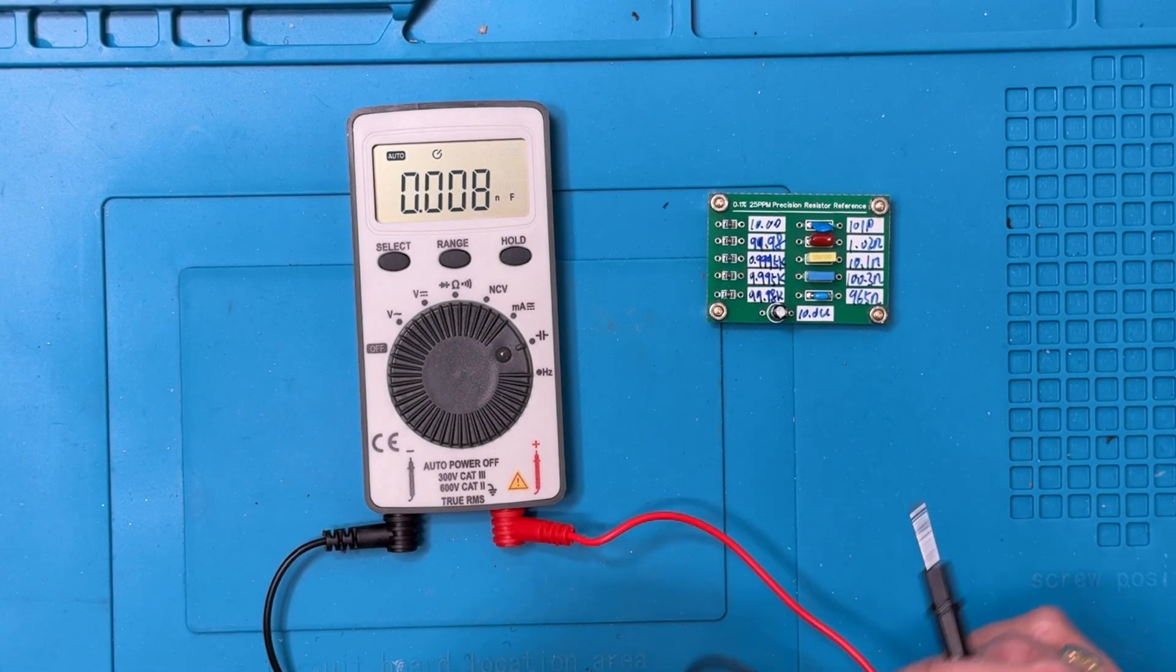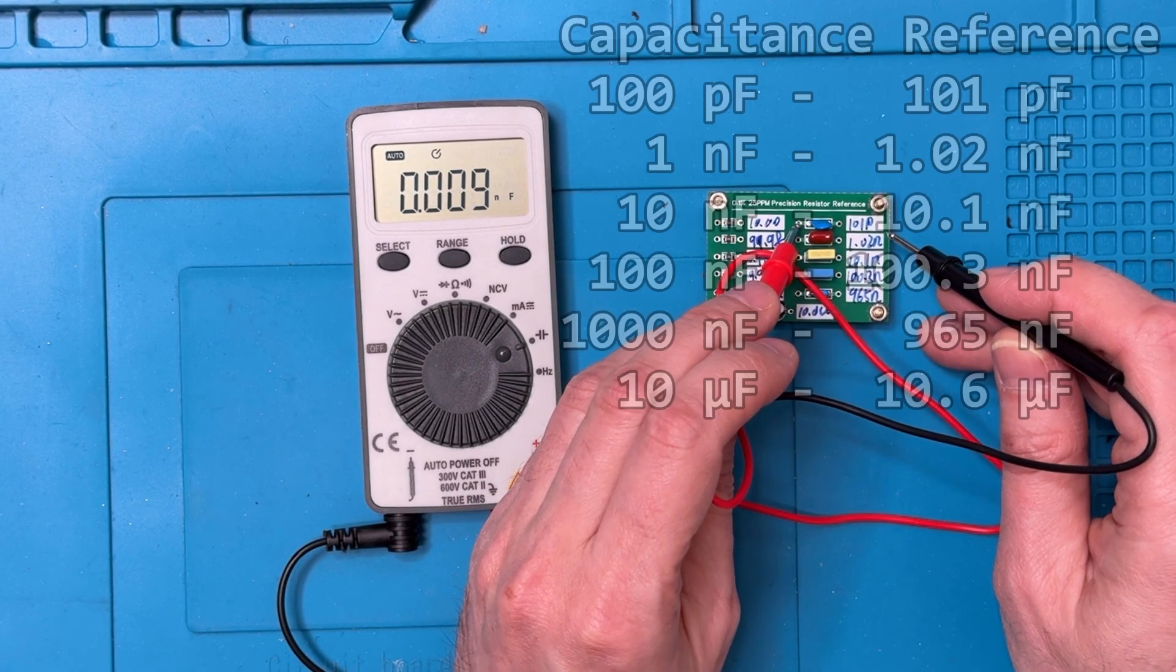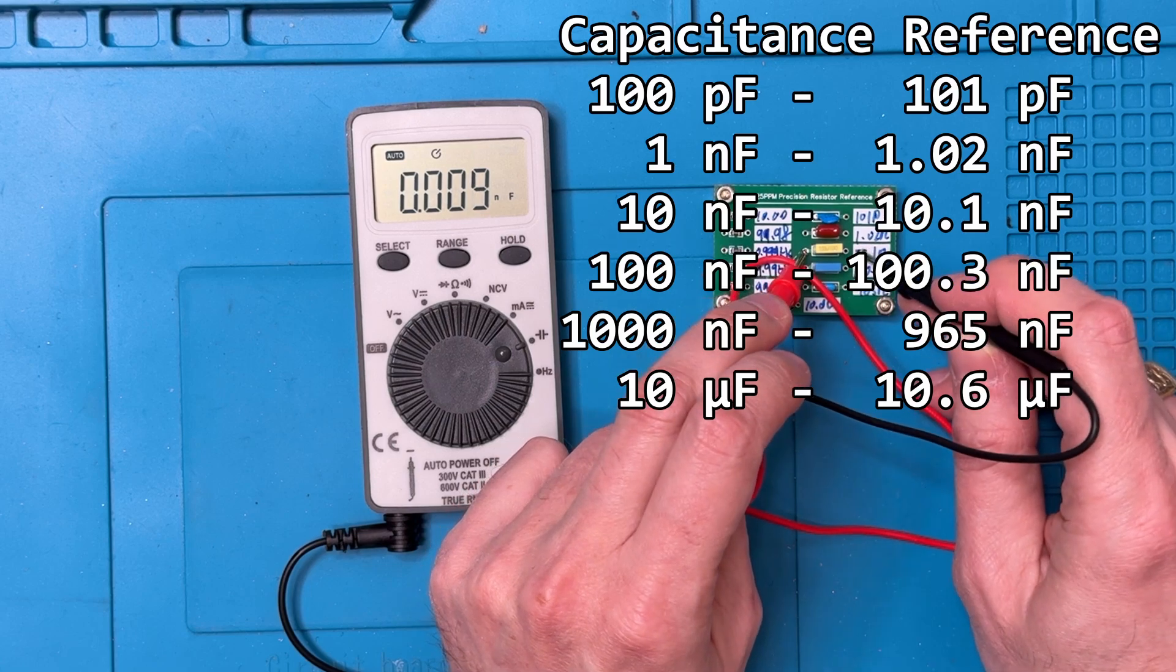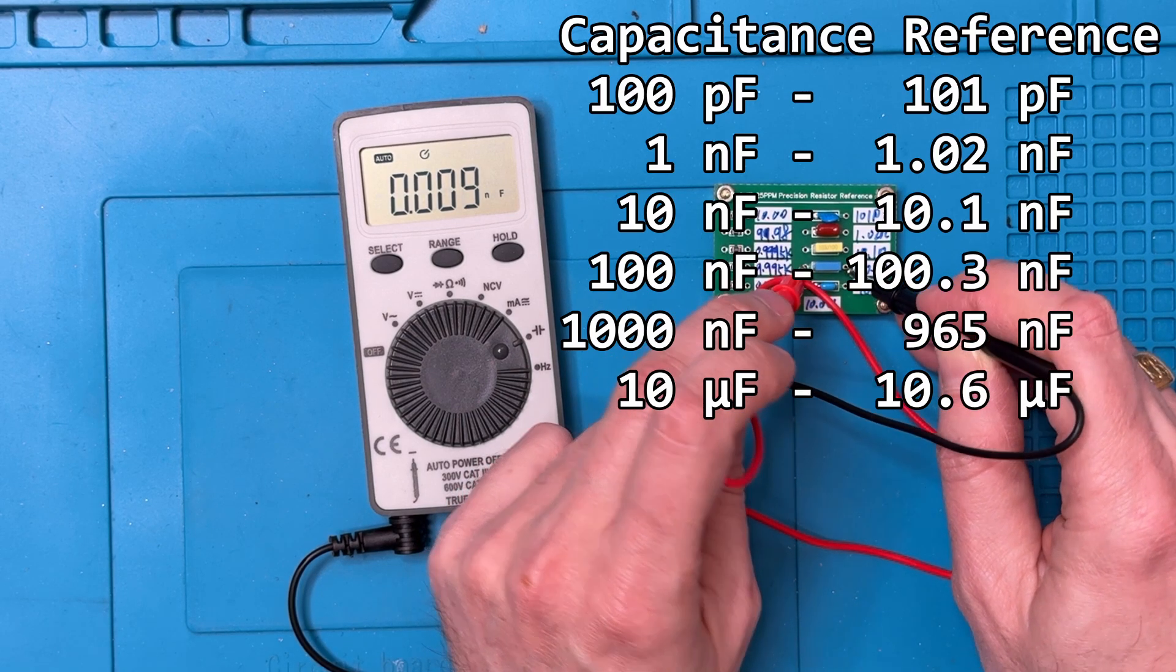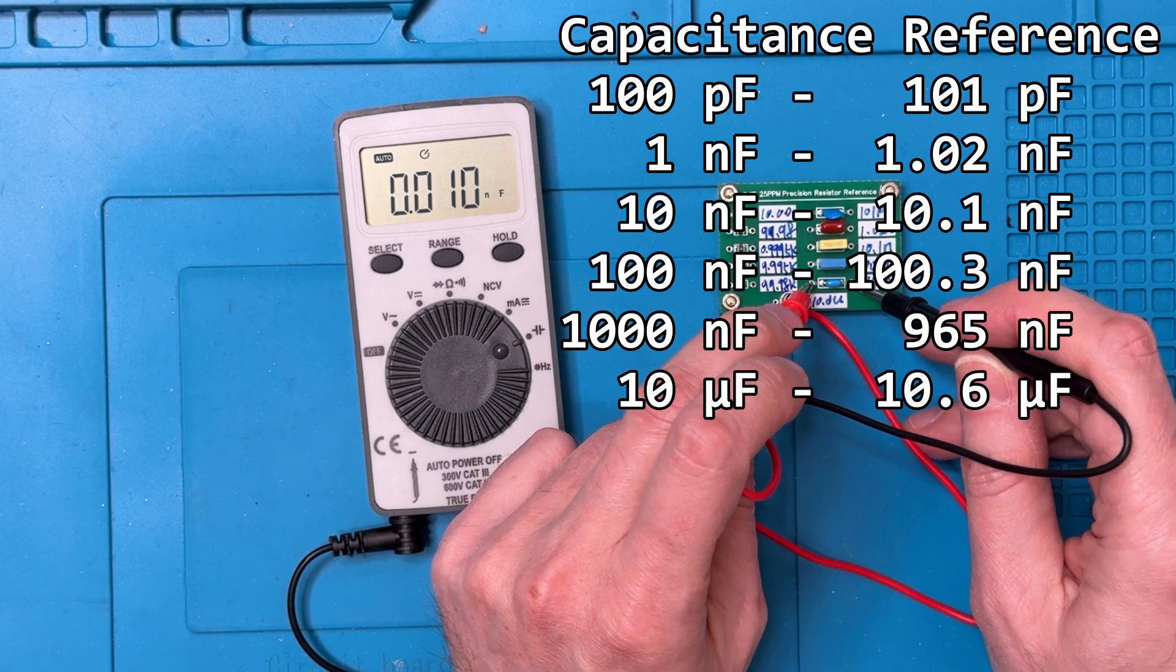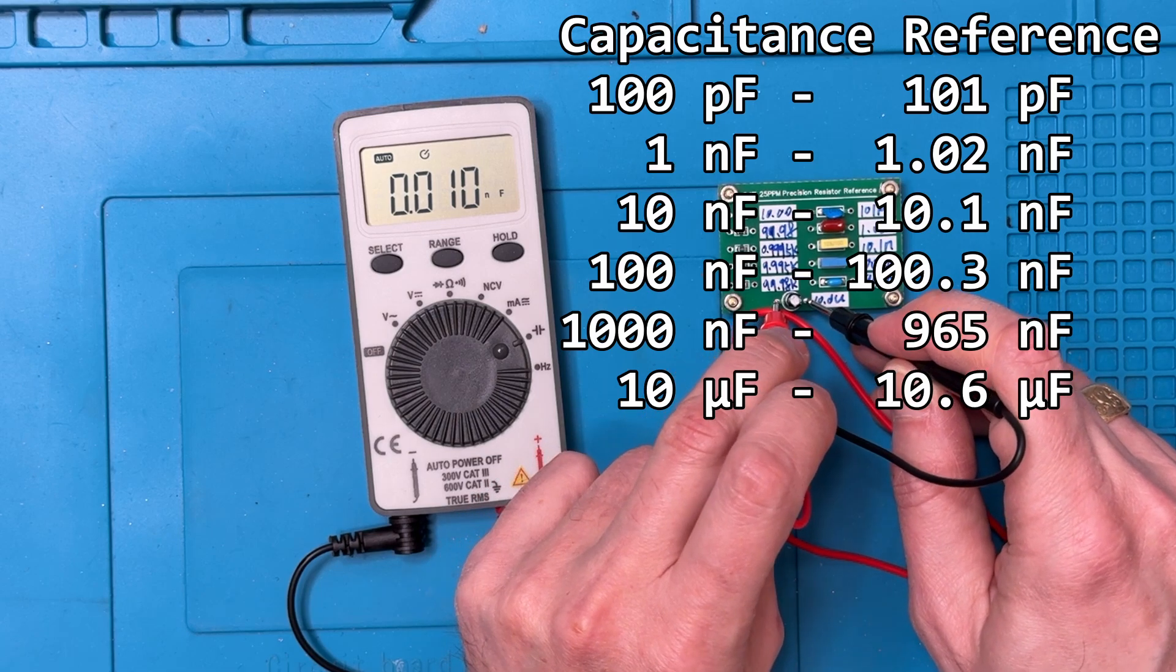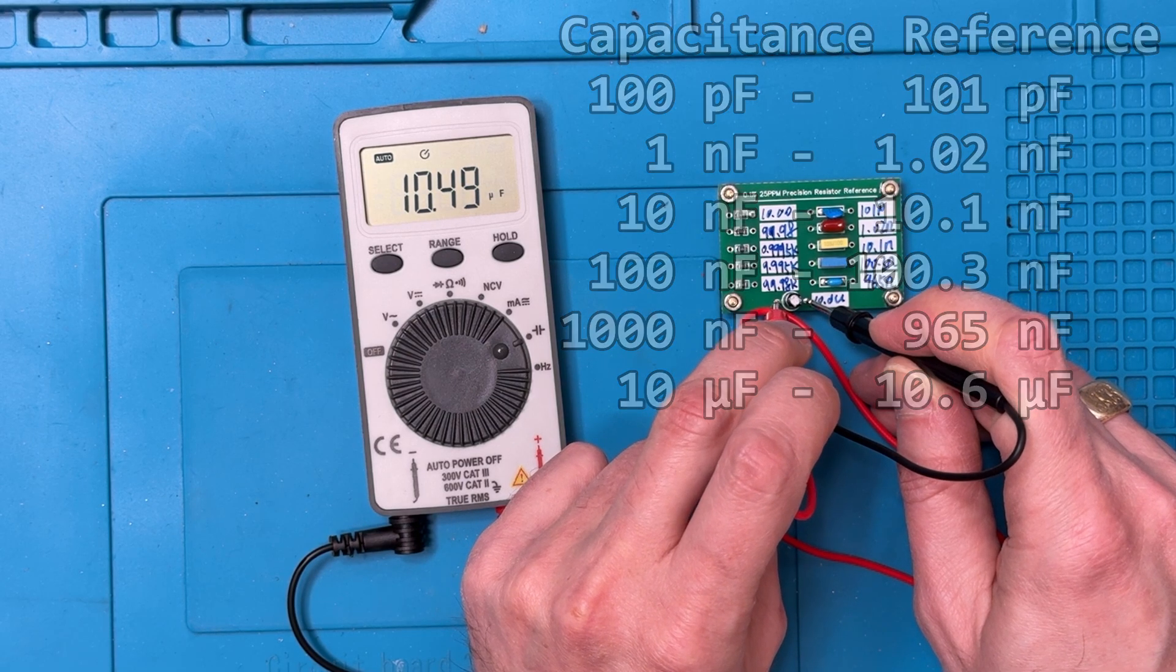For capacitance, I have this board with some calibrated or measured values. We'll just go through these. The meter is in capacitance mode. So this is 100 picofarads. That's a pretty good showing. This is 1 nanofarad. Pretty good showing there. 10 nanofarads. Reasonable. 100 nanofarads. Also fairly reasonable. 1,000 nanofarads. A little low, but comparable to what some other meters do. And the last one here is 10 microfarads. Once again, a pretty reasonable reading, all things considered.